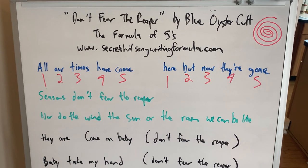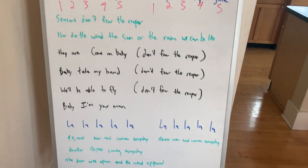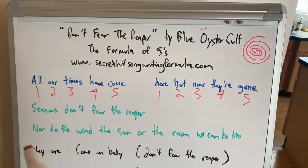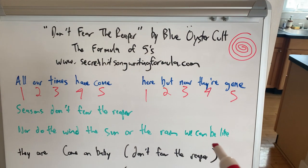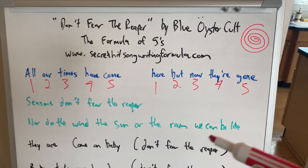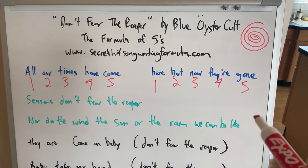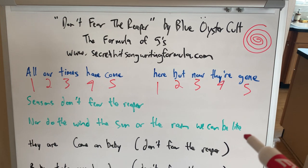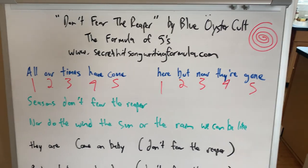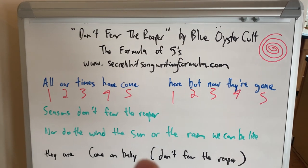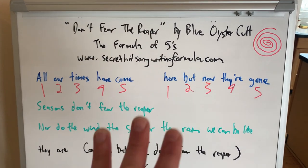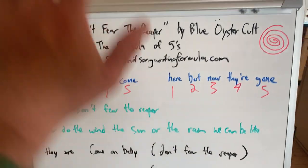Now the pre-chorus written in green is an interesting study in this song, because in the first pre-chorus you'll notice seasons don't fear the reaper, nor do the wind, nor the sun and the rain, we can be like they are. That section you may notice, well, where's the five? Well, for the first pre-chorus here, we talk about in the book, the secret hit songwriting formula, that if a section is four measures of music or less, then it's not a real song section and it doesn't have to follow the formula. So, a measure of music, of course, being four beats in the song.